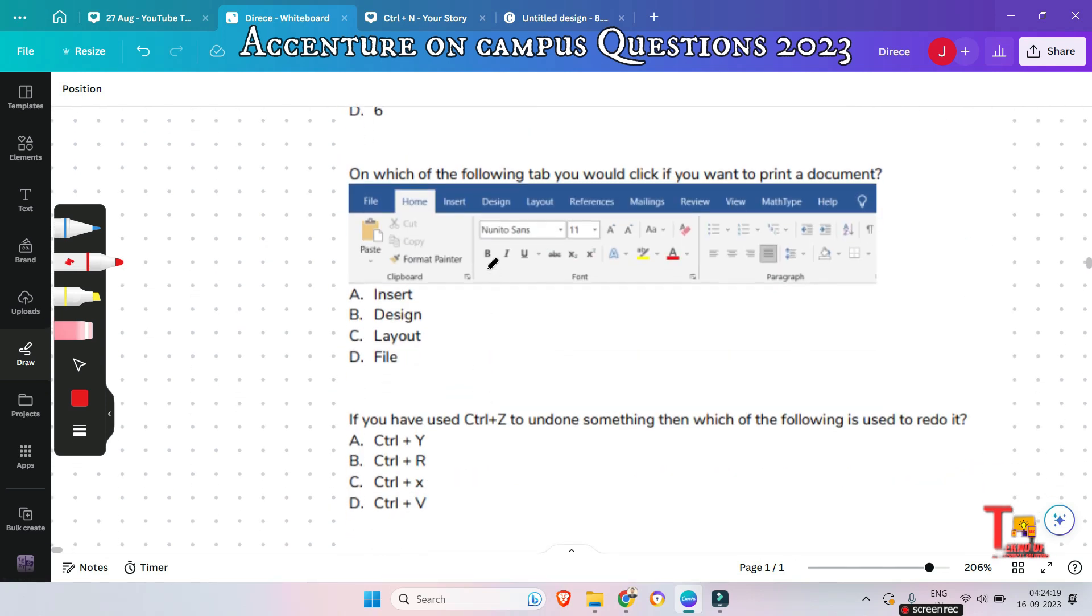Okay, the next question is, on which of the following tab you would click if you want to print a document? Insert, Design, Layout, or File? Okay, without any delay, I am answering to reduce the video time. Actually, you have to click on file, then click on print. It will be visible here.